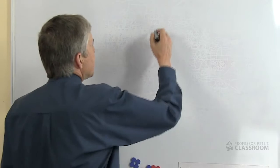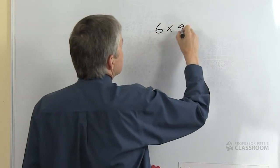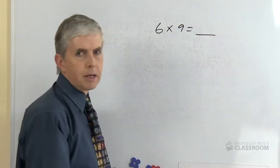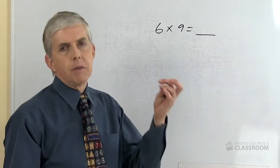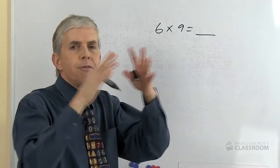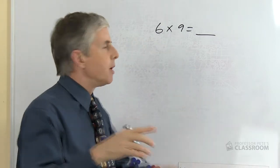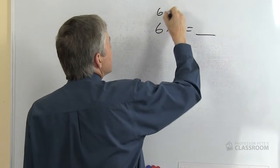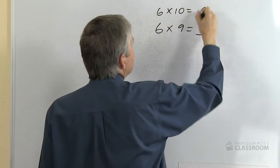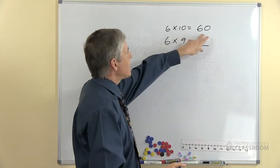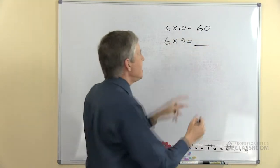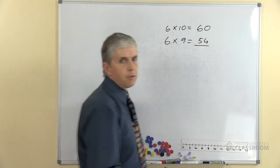Another aspect of the nine times table that we can take advantage of is the fact that it's next to ten. Take for example a question like six times nine equals what? Off the bat, that's not a terribly easy number fact to do — six is a large number, nine is a large number, it would be difficult to imagine an array six by nine. However, if we think of six times ten, that's easy — that's just place value. Six times nine would be six less than that, so it would be sixty take away six, which is fifty-four.